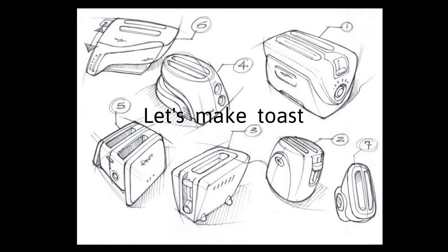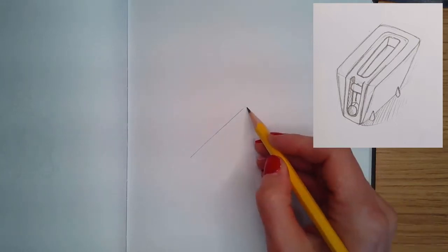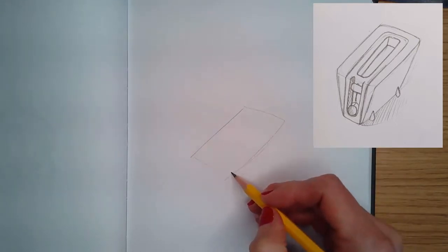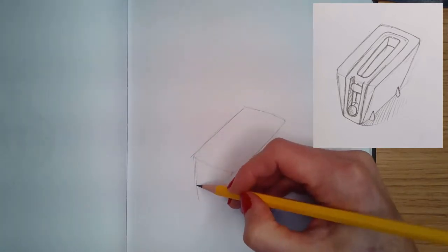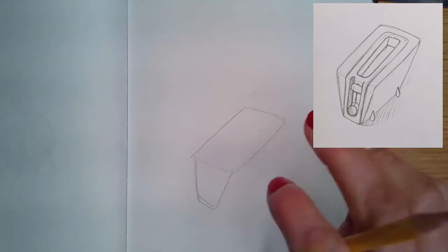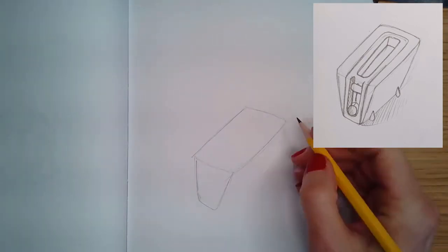Love me some toast. Okay, we're gonna draw this bottom left toaster. Start with just a rectangle that's on an angle and we're gonna draw it like a three-dimensional cube. So I'm gonna drop down my lines, and instead of being perfectly parallel they're going to angle in towards each other.